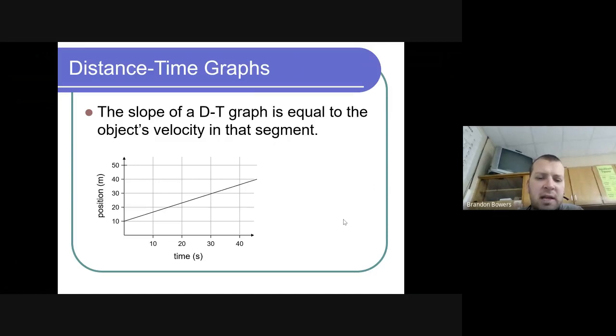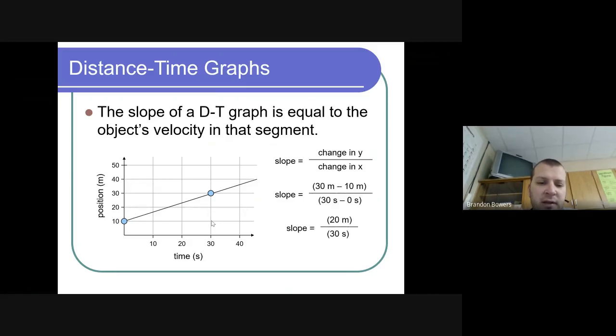How do we find the speed or velocity? Based on our equation, distance over time is velocity. If we look at this point here, we have to look at another point on the graph to determine velocity. I traveled a total of 20 meters, started at 10 and went to 30, so 20 meters in 30 seconds. Change in y over change in x. So 20 meters in 30 seconds, your slope is 0.6 meters per second. That's how you calculate the velocity in a distance-time graph.